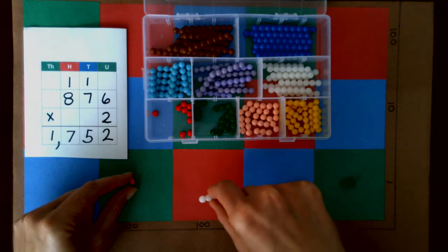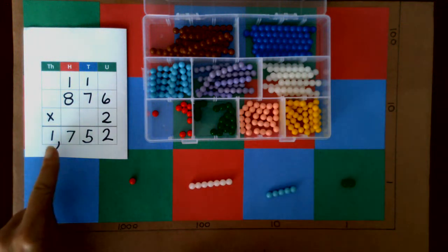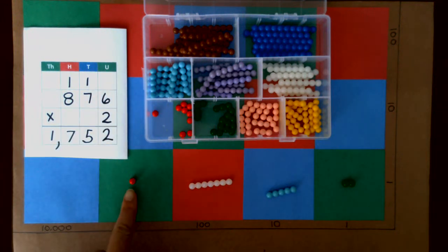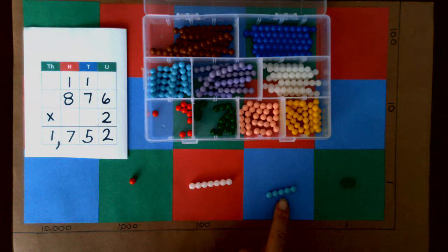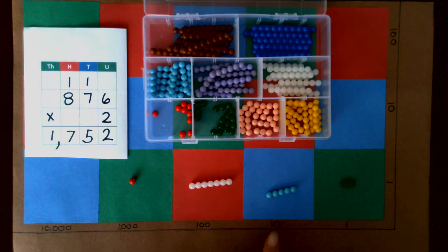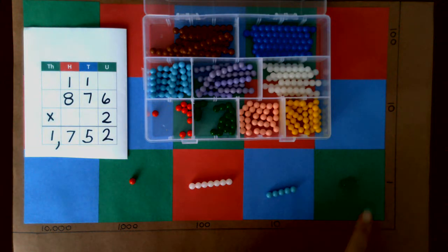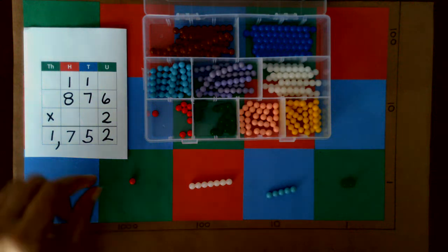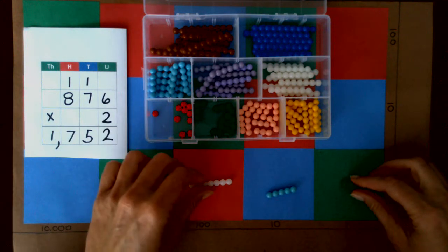My one goes here and my seven goes here. So we have one thousand seven hundred fifty two, or one thousand seven hundred five tens and two units.